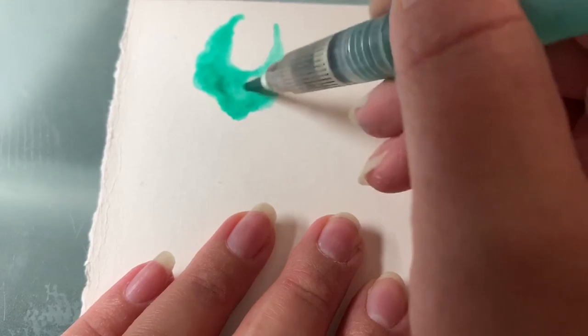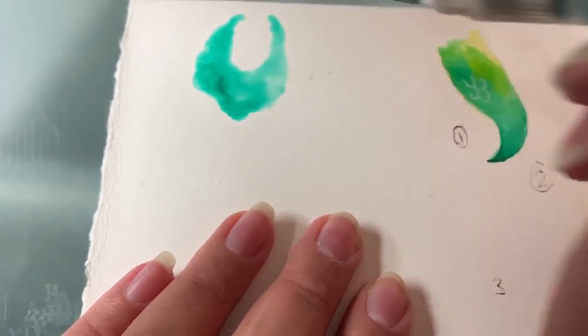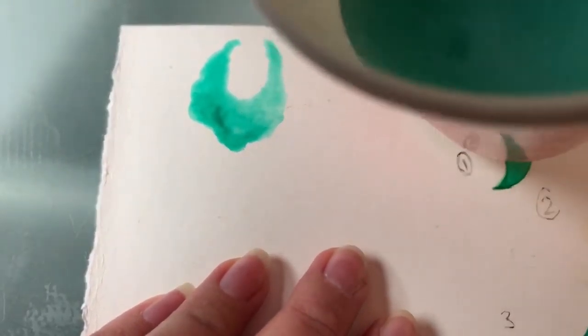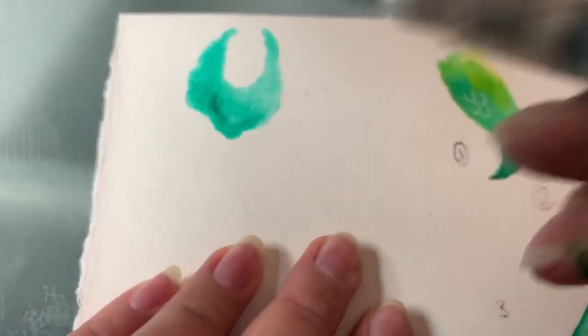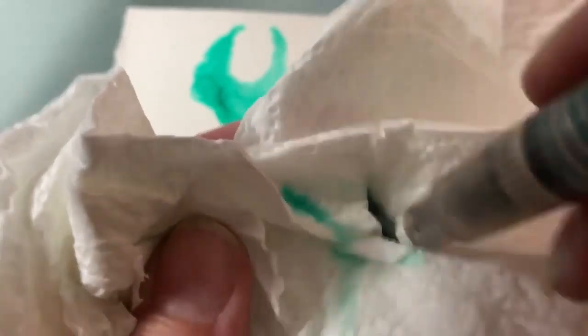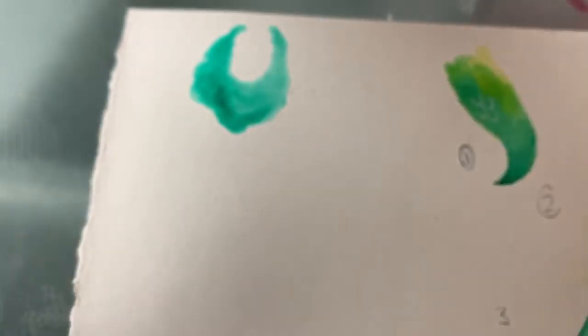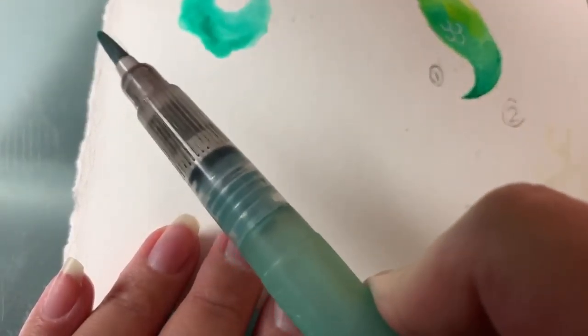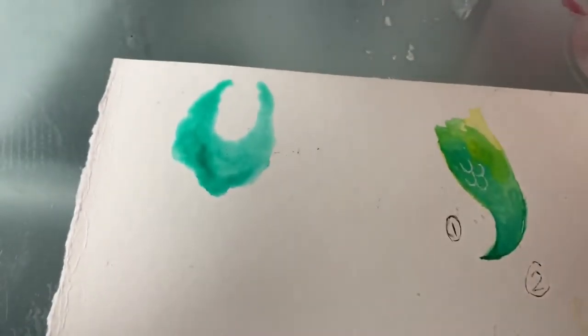One of the good things about having a water brush is that you don't need to travel with a dixie cup of water. When you need to clean your brush, you just use a paper towel, you wipe it off, you squeeze it to release water, and you keep wiping it until the water comes out clear. Then you clean your brush and you're ready to go again. So this is a really good tool. That's my tutorial on how to use a water brush, it's pretty straightforward.